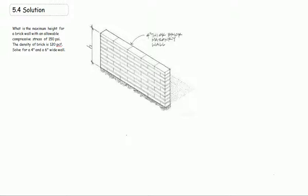We're trying to determine the maximum height of the wall when the density of the wall is 120 pounds per cubic foot and the allowable compressive stress is 150 psi. So first we need to find the stress at the bottom of the wall.